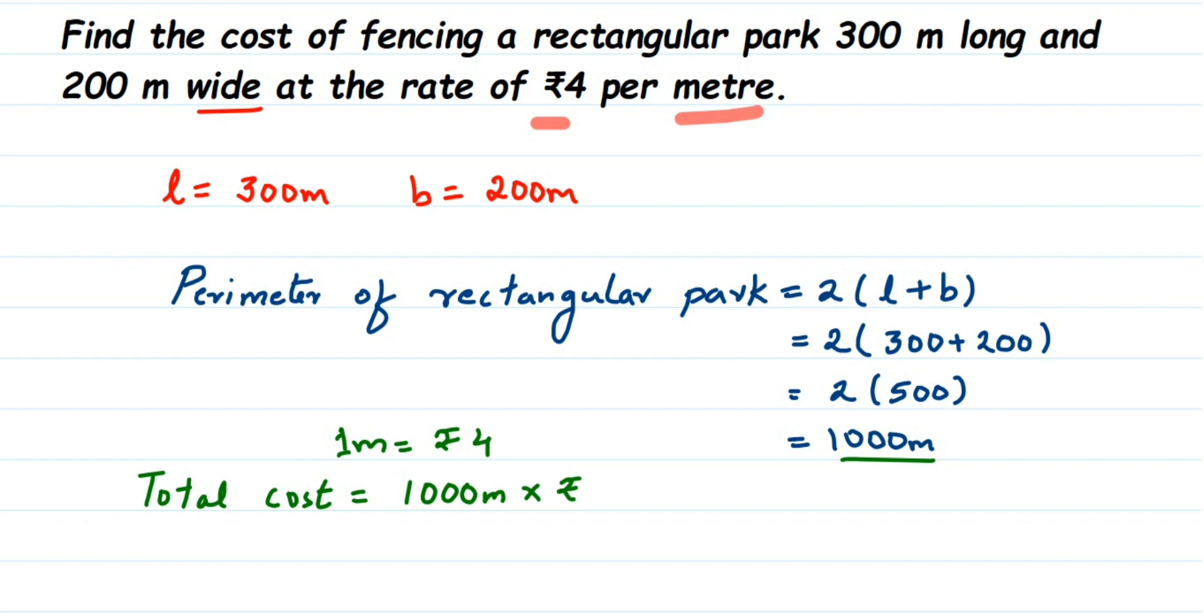Which will be equal to, we don't have to write down thousand meters here, we'll just write down thousand. So thousand, it will be equal to four thousand rupees. So that's it. I hope this question is clear. You can expect this type of question for three marks or two marks. In case you have any other question or doubt, you can drop a comment. I'll try to make a video on it. Thank you so much for watching.